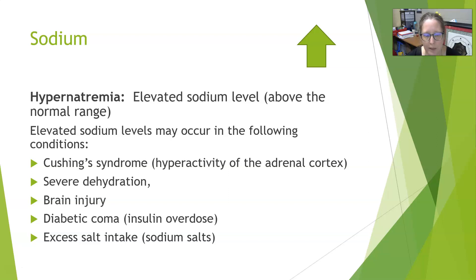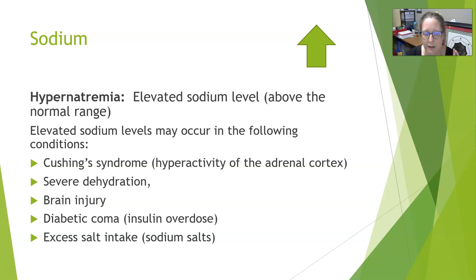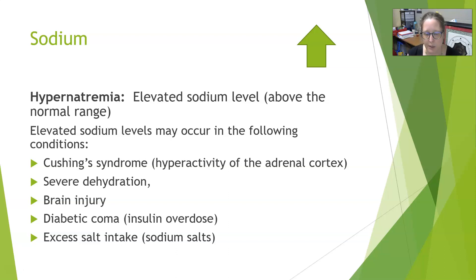Excess salt intake can also cause hypernatremia, though you have to take in quite a bit. Interestingly, in the American diet, excess salt doesn't mostly come from people salting their food at the table — it mostly comes from the high salt content of processed foods such as breads, pizzas, hot dogs, and hamburger buns. Processed breads in particular have a lot of salt.